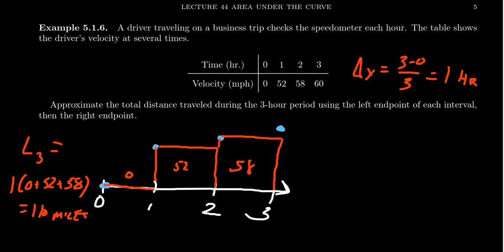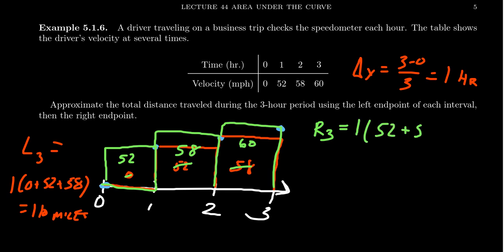On the other hand, if we use the right endpoint rule, R3, we determine the height of the rectangles by the right endpoint. And then we get the right point right here. So for the first one, we would estimate that speed to be 52 miles per hour. For the second one, we'll get the 58. And for the third one, we're going to get 60. The Delta X will still be the same in this situation. We get 52 plus 58 plus 60, and so this gives us 170 this time, 170 miles we expected.